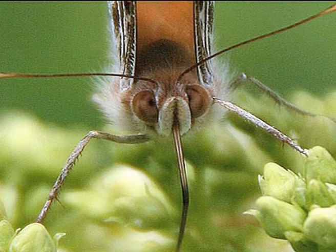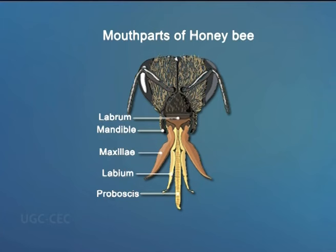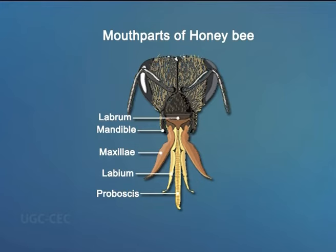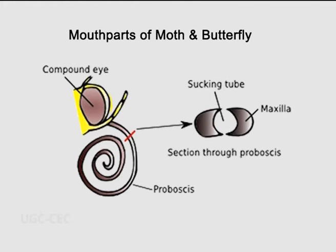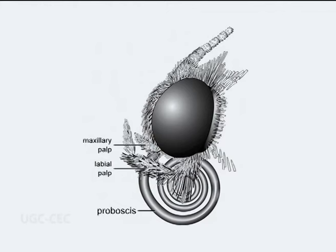The proboscis is a long tube formed by heavily modified maxillae. In honey bees, the mandibles are very small and suitable for molding wax, and the labium is curved downwards and inwards forming a tube used for sucking up nectar. In butterflies and moths, the mandibles have disappeared altogether; the maxillae are elongate, channeled along their surfaces and held together by hooks and spines to form a sucking tube. This proboscis may be very long and when not in use is carried coiled up like a watch spring under the head.